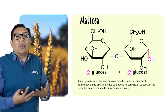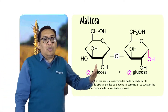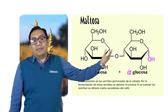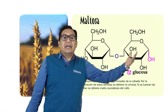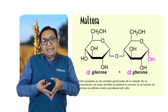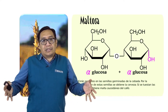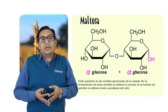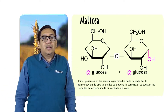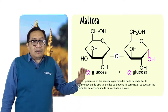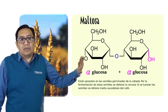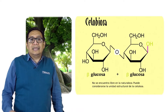Recuerden que cuando nosotros hidrolizamos o rompemos a una maltosa, obtenemos dos moléculas de alfa-glucosas. Por ejemplo, si nosotros tuviéramos 100 moléculas de maltosa y las hidrolizamos, obtenemos entonces 200 moléculas de glucosa. La maltosa se encuentra en muchos alimentos, sobre todo en los tipos de cereales.